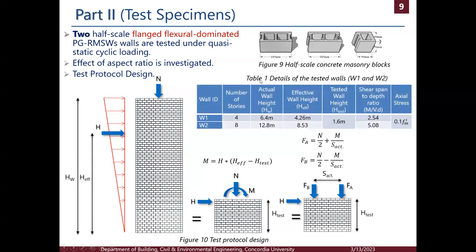In this study, we are testing two walls. The first simulates a four-story structure and the second simulates an eight-story structure. These are the actual and effective heights of the walls, with the tested wall height being 1.6 meters. Both walls are the same height, and the difference in needed effective height is compensated through an additional overturning moment controlled during the test itself.